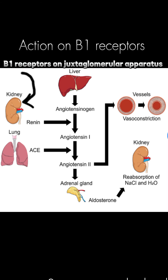Sympathetic activation can also stimulate beta-1 receptors of the juxtaglomerular apparatus to release renin from the kidneys. Renin initiates the renin-angiotensin-aldosterone system (RAAS) cascade, leading to the production of angiotensin-2, a potent vasoconstrictor, and aldosterone, which promotes sodium and water retention. These effects further increase blood pressure.